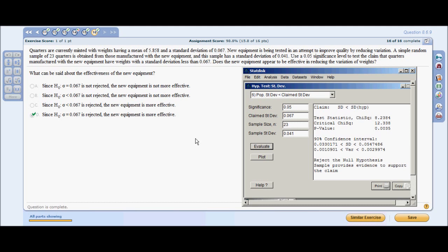Use a 0.05 significance level to test the claim that quarters manufactured with new equipment have weights with a standard deviation less than 0.067. You're going to go to StatDisk analysis, standard deviation of one sample. But this time you're going to use number 6 as a population standard deviation less than your claim standard deviation as it asks you to use. Plug in your values: significance of 0.05, claim deviation of 0.067, you have 23 quarters that were sampled, and your sample standard deviation was 0.041. You're going to evaluate.